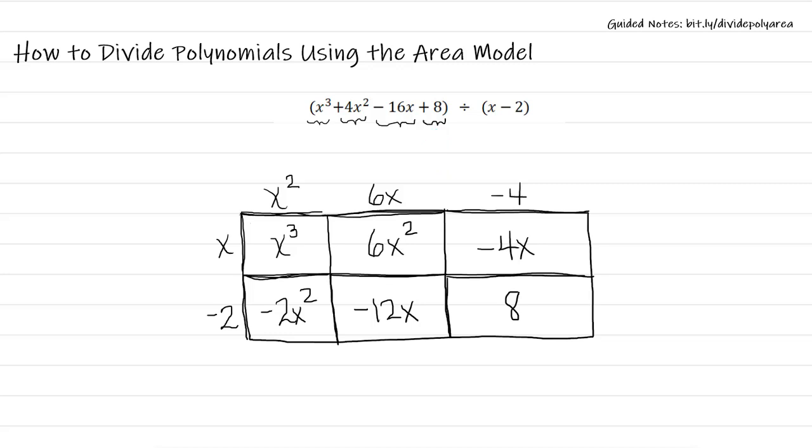So we have completed the division. And our quotient is the value represented by the expression right here, the x squared plus 6x minus 4.